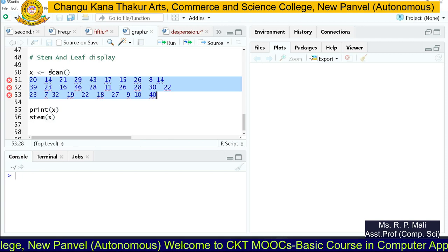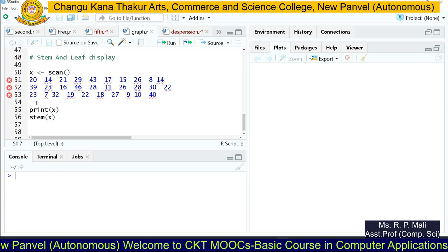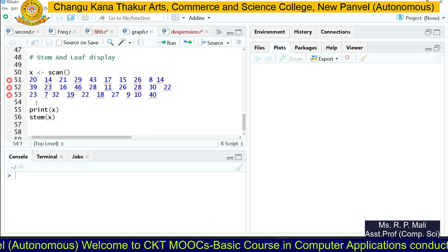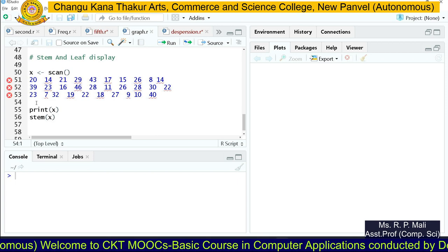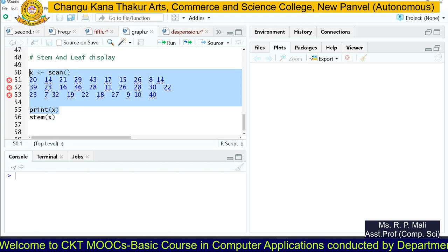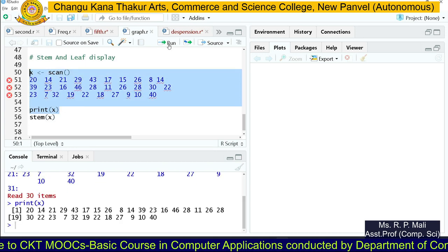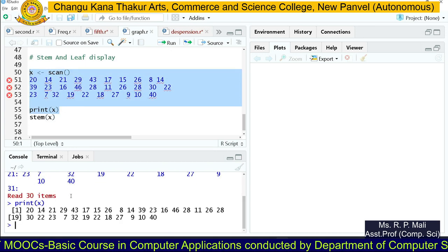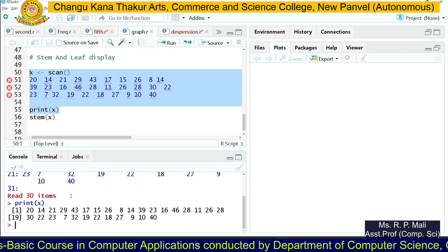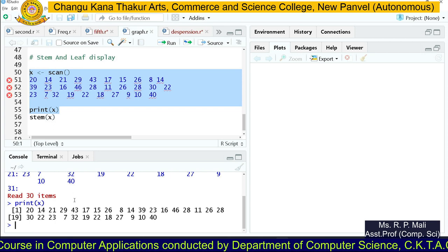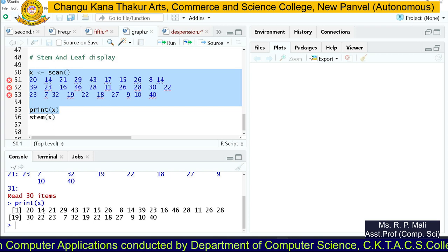The c function and scan function are similar but work differently. I'm going to execute this code. We have read 30 items here, and we printed x, which means we successfully stored the data into the x variable.